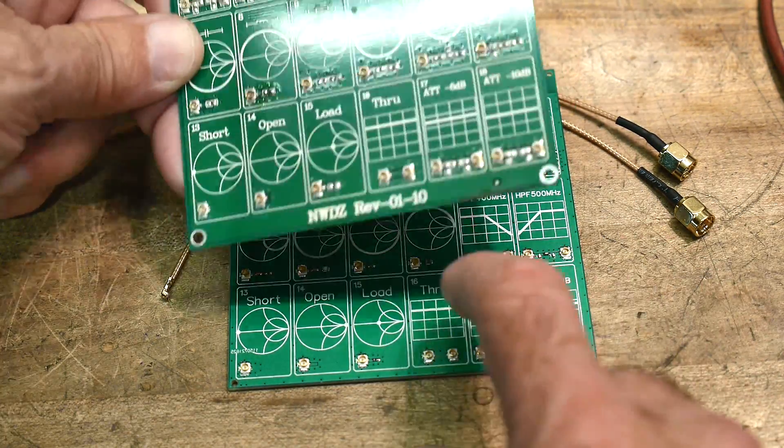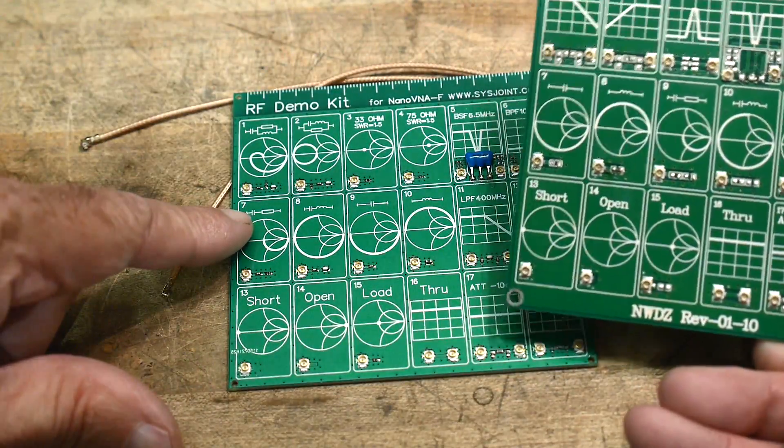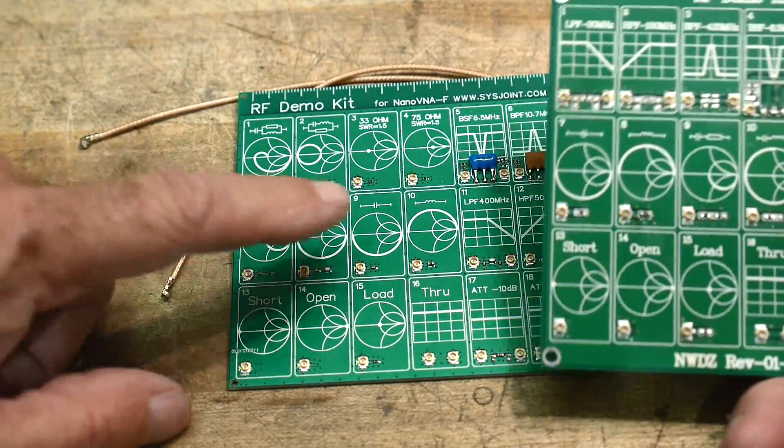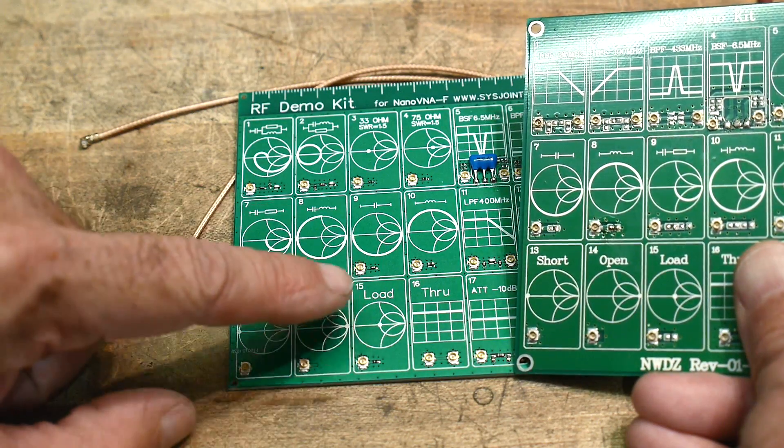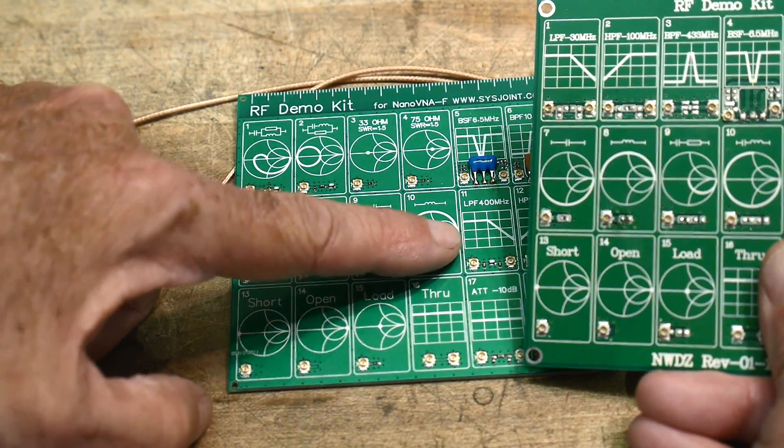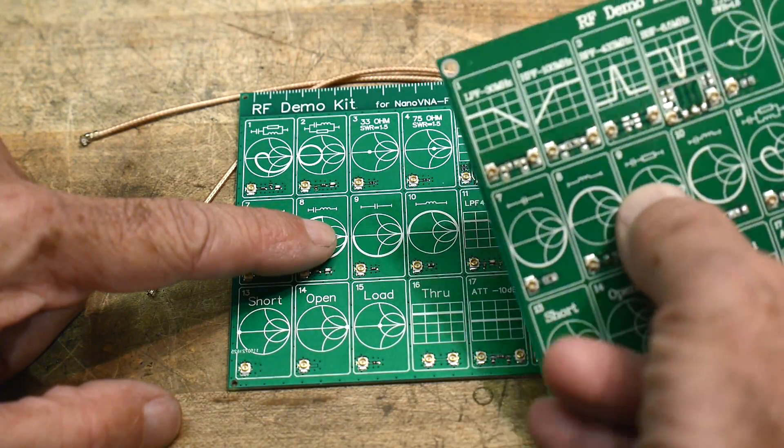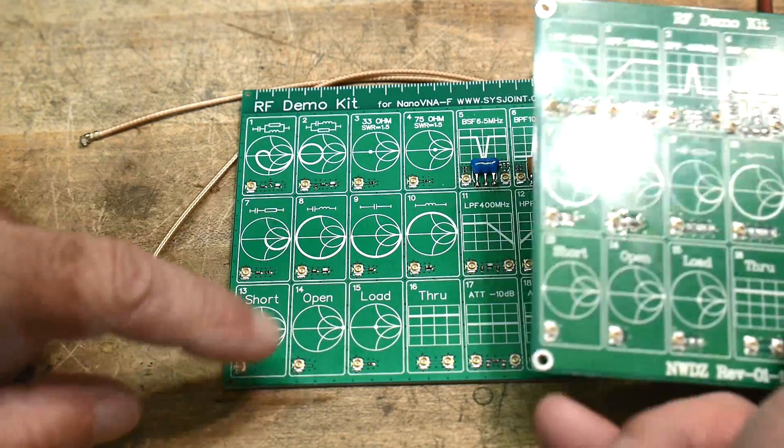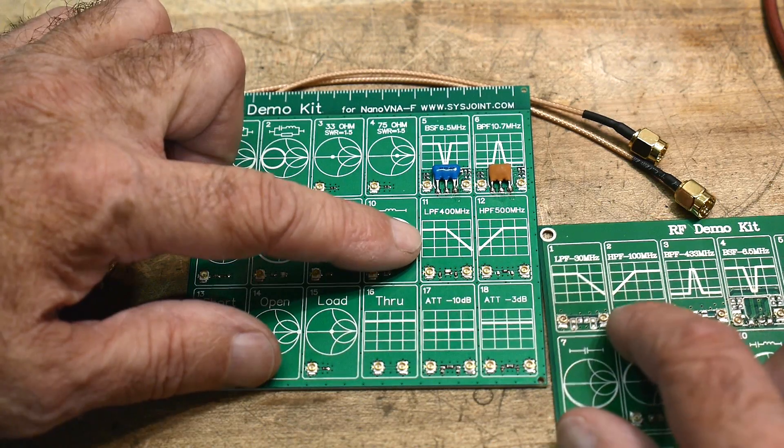And then we have, they're out of order too. So we have a capacitor only, yes, inductor only. And then we have that one and that one match, and that one and that one match. And then we have two filters, so those are out of order.